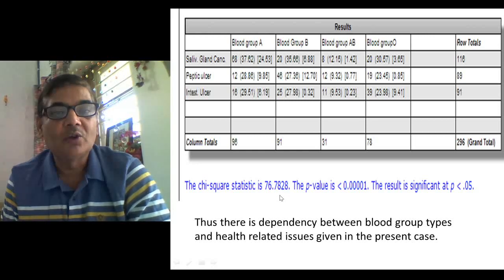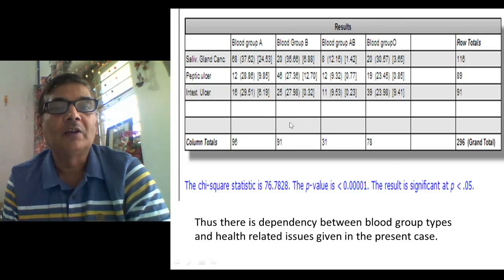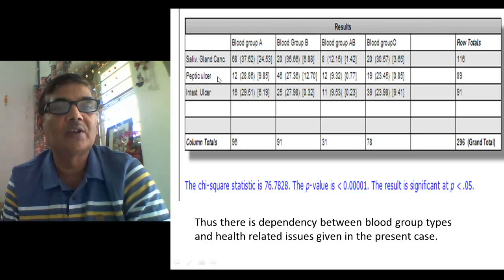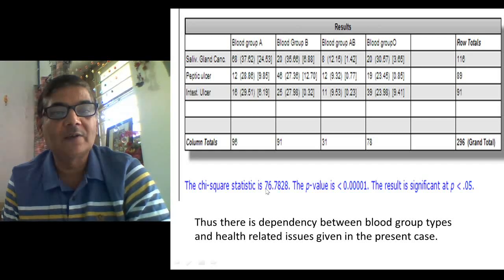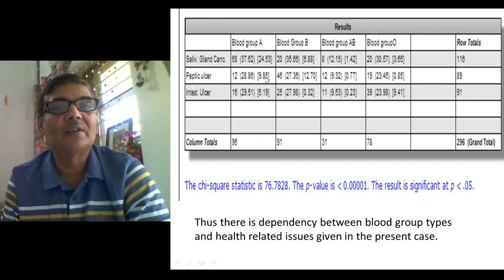The table value will be less than this, because the degree of freedom here is (4−1) × (3−1) = 6. At 6 degrees of freedom, the table value is close to 12 point something — much less than 76.7828. Since the table value is less than the calculated value, you reject the null hypothesis. The result is highly significant: there is dependency between the type of blood group and the specific kind of disease occurring in these individuals.